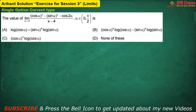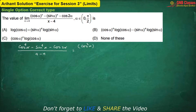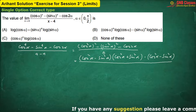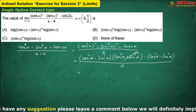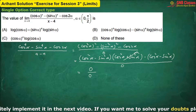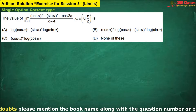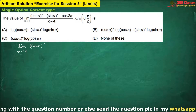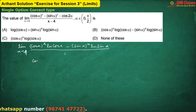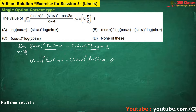Let us move to the next problem. In this case, if I put x equals to 4 in the numerator we are going to get zero, and in the denominator also we are going to get zero. So it is again zero by zero form, and we can apply L'Hôpital's rule — differentiating numerator and denominator separately. This part will be cos squared alpha minus sin squared alpha minus cos squared alpha minus sin squared alpha. Now if I put the limit, it is a very straightforward sum. Hence option B is correct.